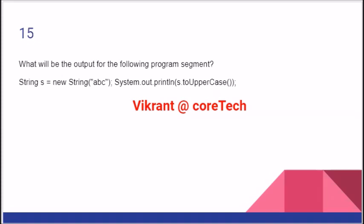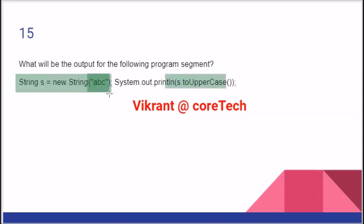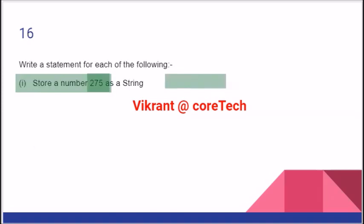Let us see the next one. This is a string, another way to initialize a string, allocating memory at runtime. When I convert it into uppercase, this 'abc' will be in uppercase letters — that is capital A, capital B, capital C.